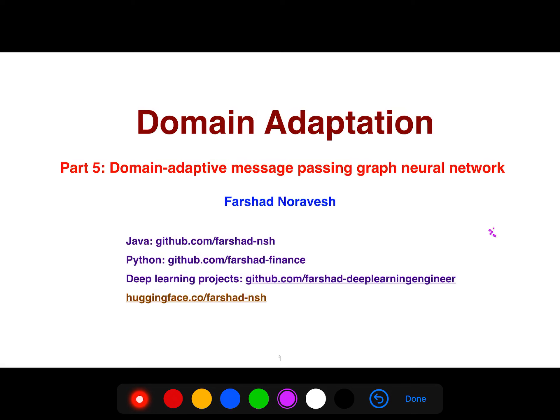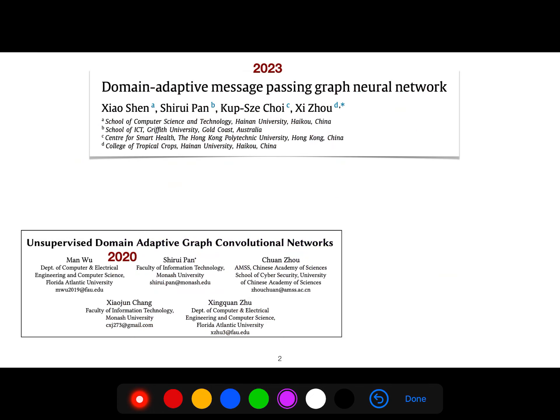In this video, I'm going to explain another article about domain adaptation, and we are using it for message passing graph neural networks. It's a kind of neural network we call message passing GNN, and we use the technique of domain adaptation because we have a domain shift problem.